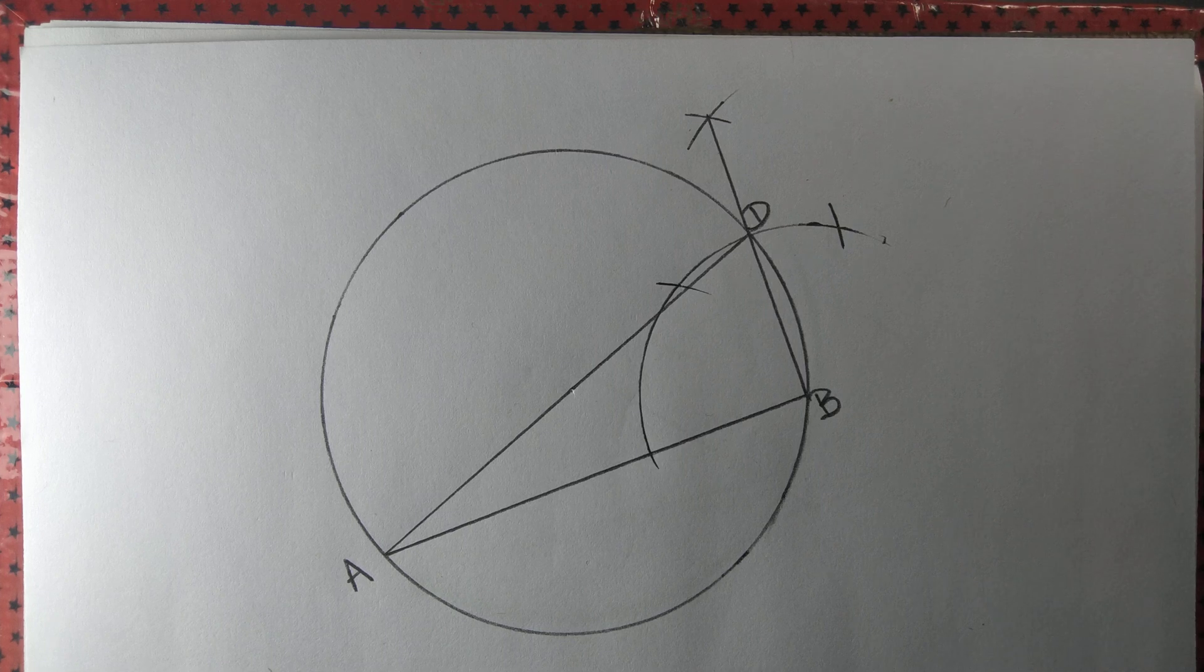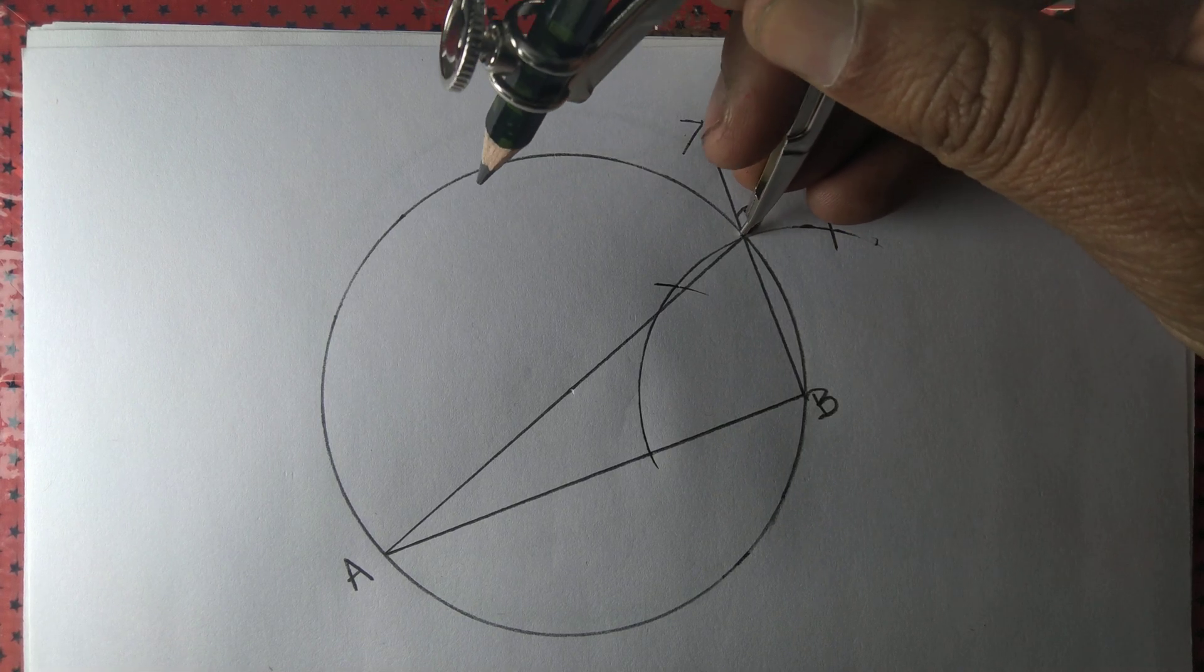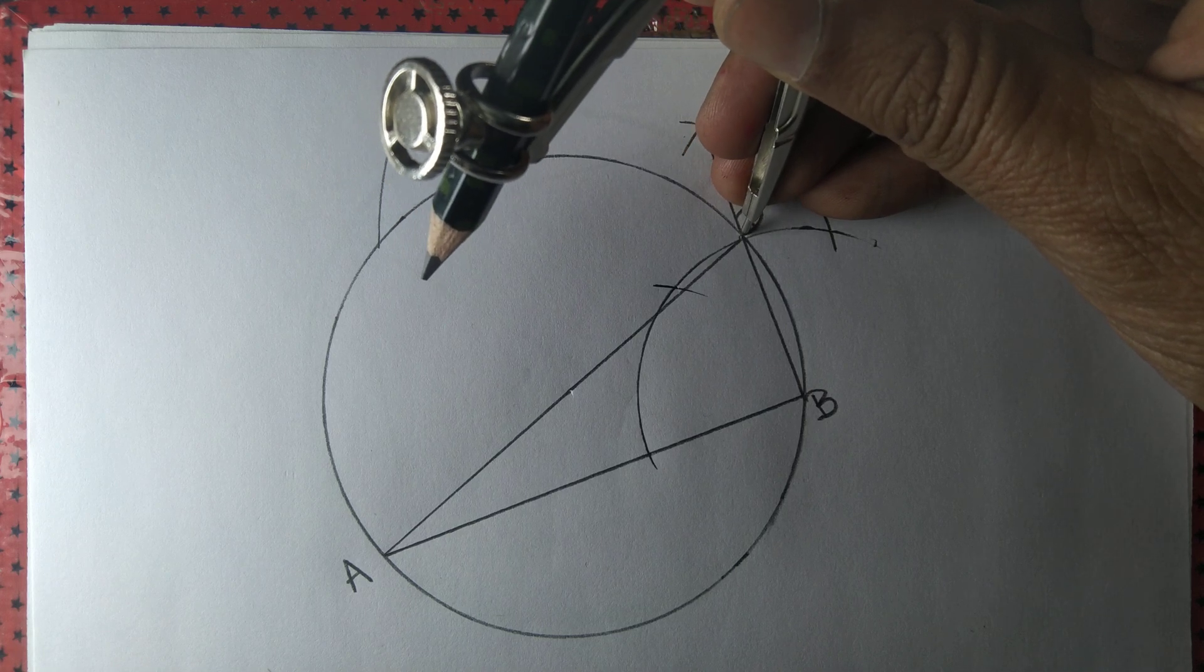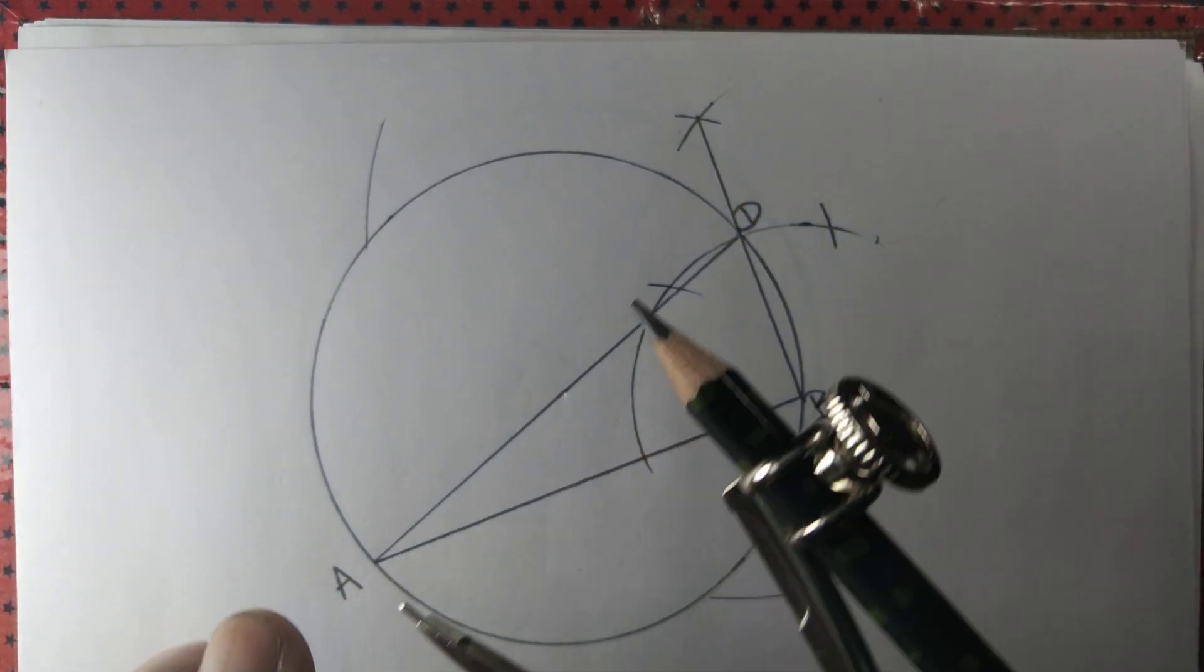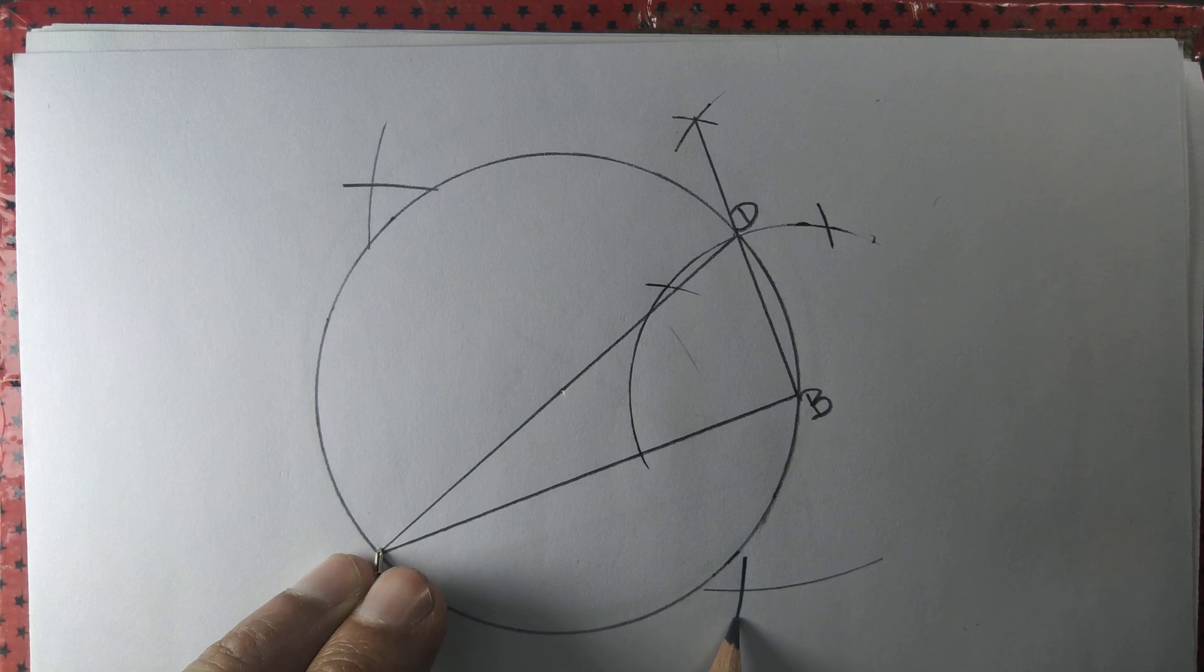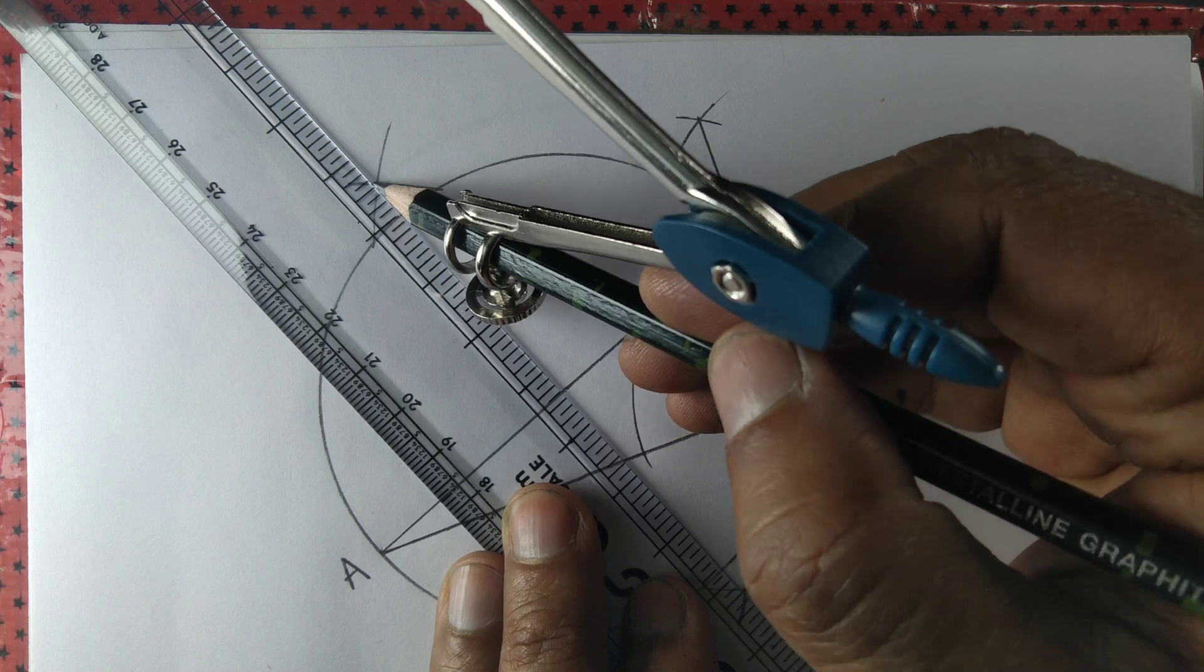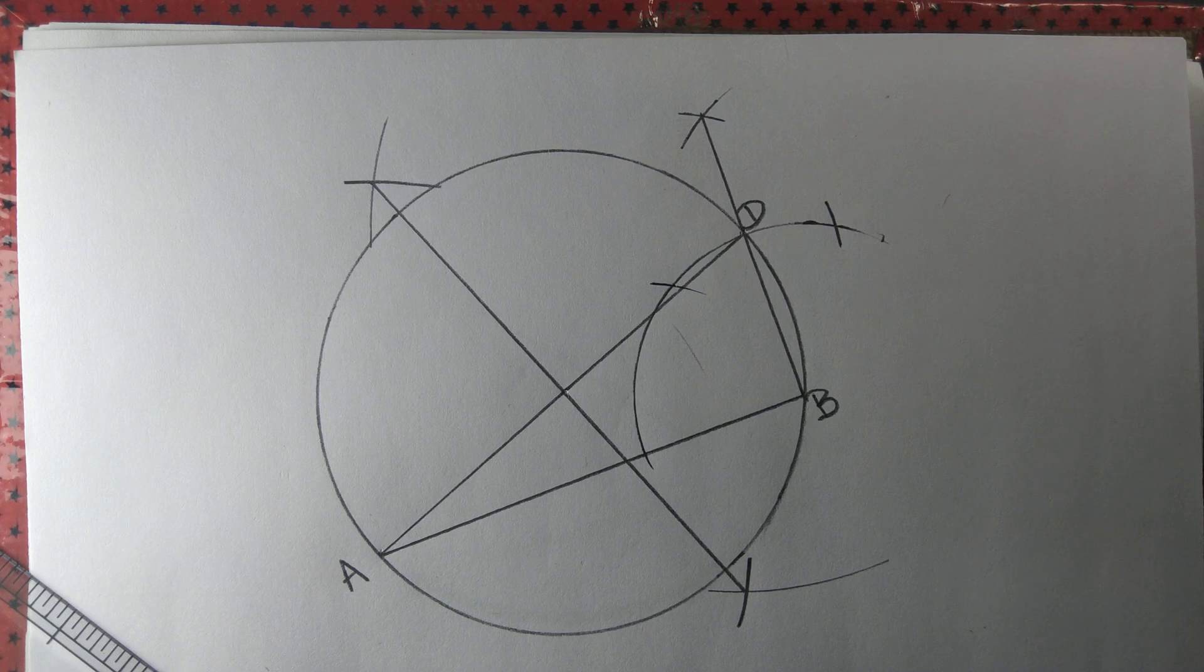Let us draw perpendicular bisector of AD. In order to draw perpendicular bisector, we need to draw two arcs, one from point D above and below, and two arcs from point A as well. Let us join the intersection points of those two arcs by a straight line. So we have drawn a line that is perpendicular to the diameter.